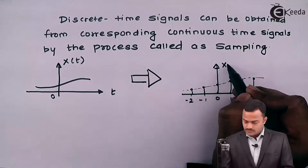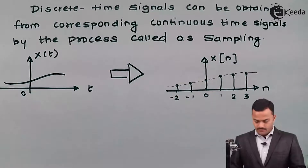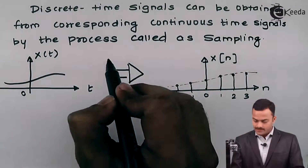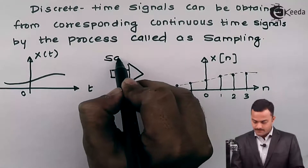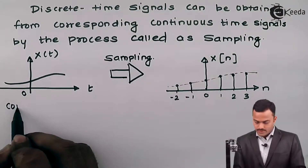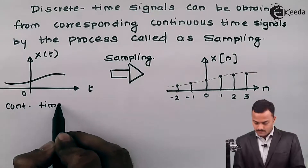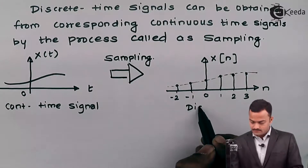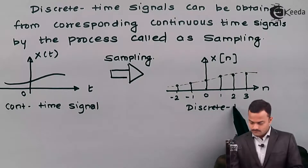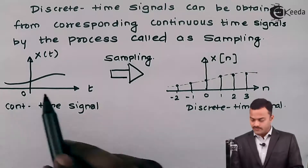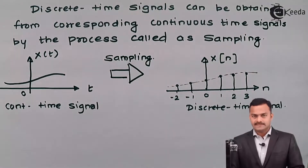By doing the sampling I am only getting a sample at integer values. From the continuous time signal I can get a corresponding discrete time signal by doing the process of sampling. Continuous time signal and discrete time signal are equivalent to each other, except that from the continuous we can get a discrete by the process of sampling.